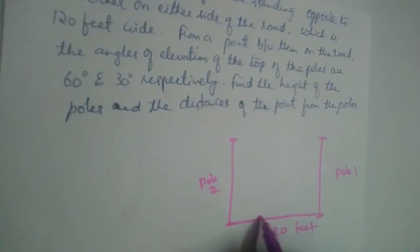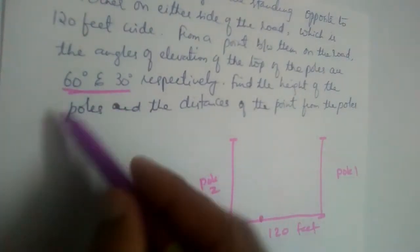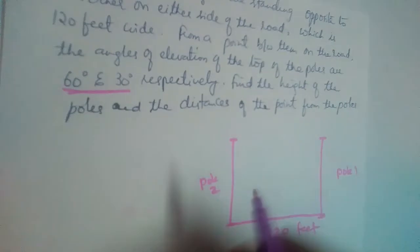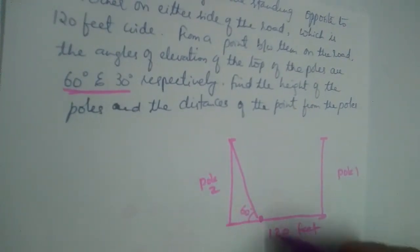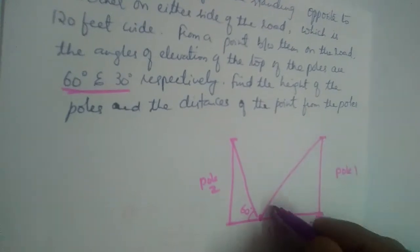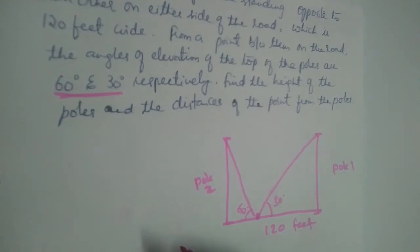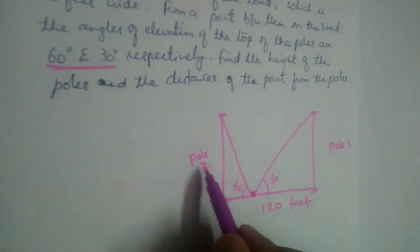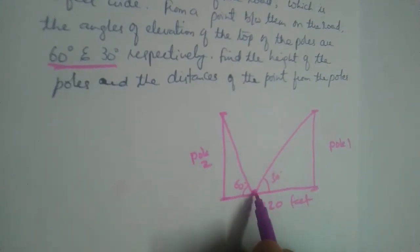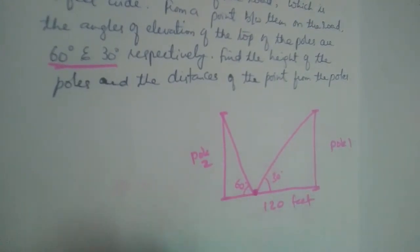Suppose you are seeing from here — it is not the midpoint because the angles are not the same, they are different: 60 and 30 degrees. So this is 60 degrees and this is 30 degrees. Find the height of the poles and the distance of the point from the poles — that is what we need to find, including where this point is between the two buildings.